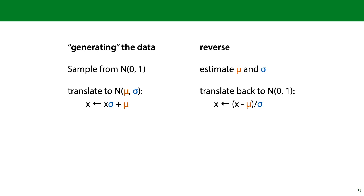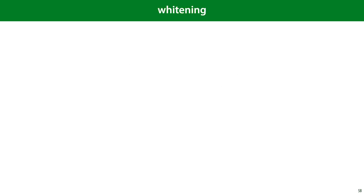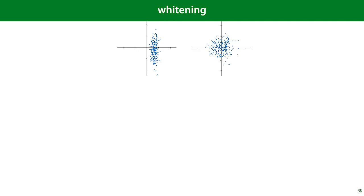This will translate the data back to the standard normal distribution that we imagine the data came from. Here's what standardization looks like applied to data with two features. We apply standardization to each feature independently, and we end up with a nice spherical distribution of points centered on the origin. This is what data sampled from a multivariate normal distribution looks like — the multivariate version of the standard normal distribution.